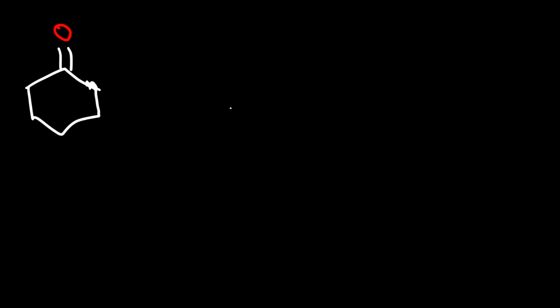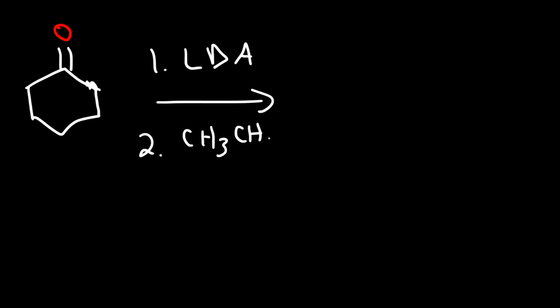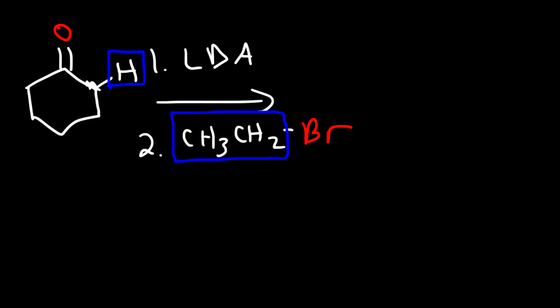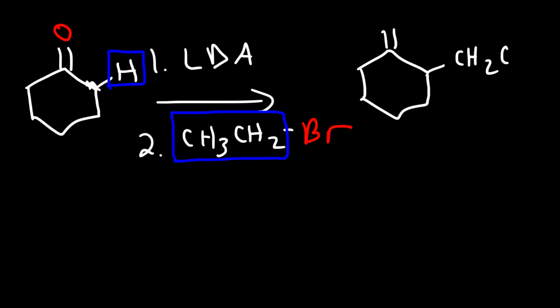Let's work on a practice problem. We have this ketone, and in the first step we react it with LDA, and in the second step with ethyl bromide. Draw the major product. All we need to do is replace the alpha hydrogen with the ethyl R group. That gives us the major product.